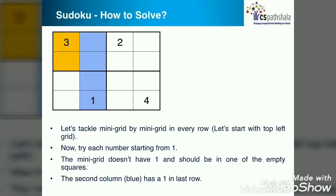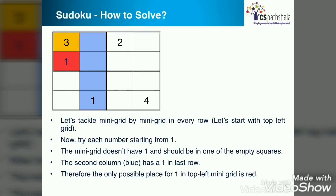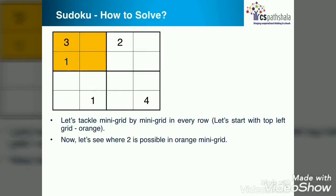Next try 1 as it is not in the grid and should be placed in the empty square. Where should I put it? Can I put it in the column to the right of 3? No. Do you know why? Right. This column already has number 1. Can I put it in the row below 3? Yes. Because in this mini grid, this is the only place possible to put number 1.